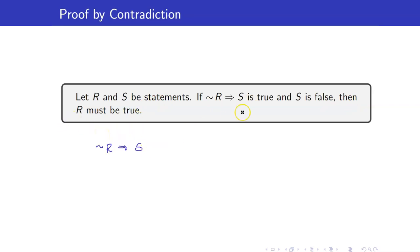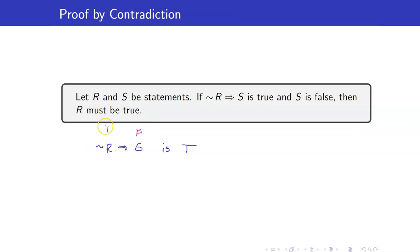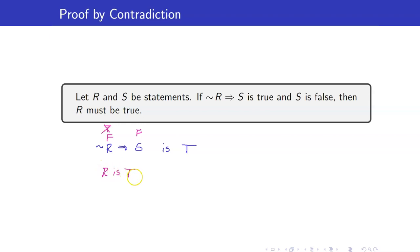Why is this so? We know that this implication is true, and we know that the conclusion S is false. What can we now say about the premise? Can the premise be true? No, because if the premise is true, you have a true premise but a false conclusion, which would mean that the implication is false. Hence, this cannot happen, so we now know that the premise not R must be false. If the premise not R is false, thus we have that R must be true.